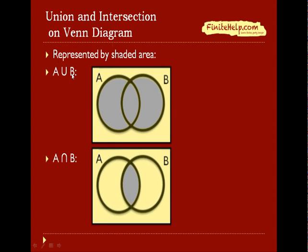To represent a union, you would include everything that is in A or in B. Here you can see the shaded area is A union B.